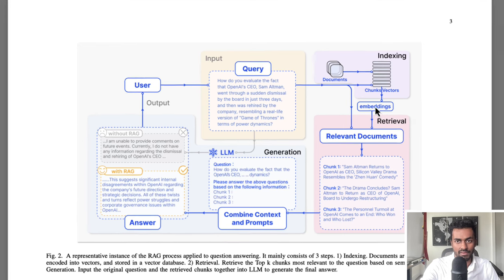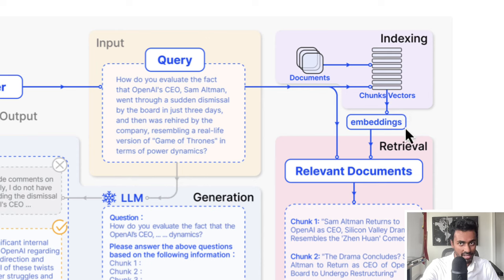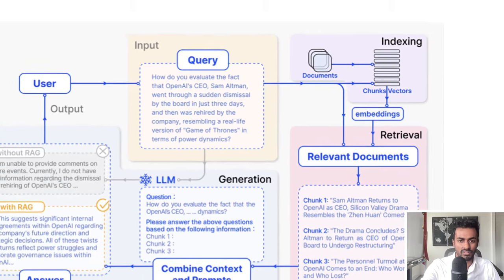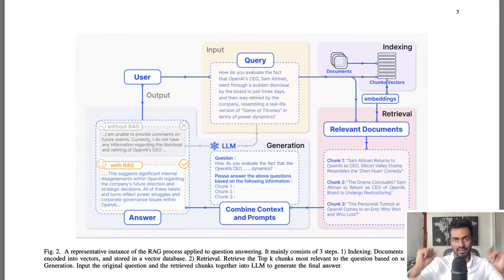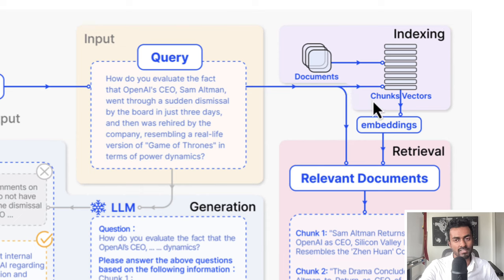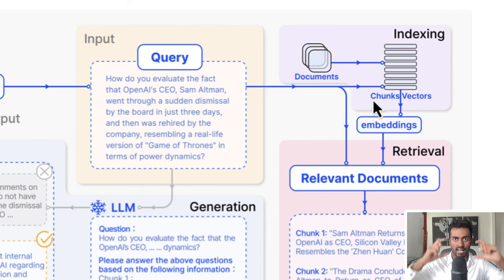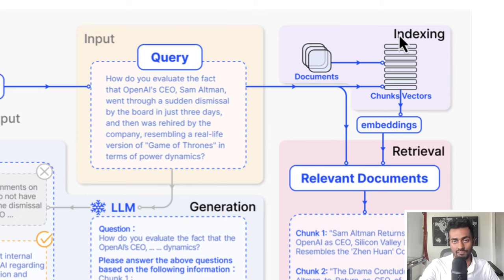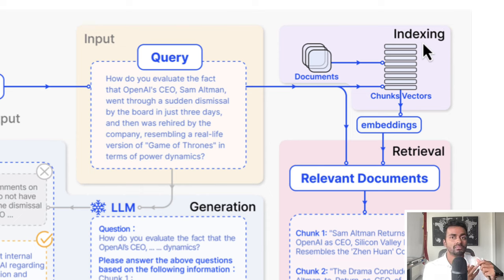Coming back to the figure: we've talked about chunks, vectors, embeddings, and indexing. Before a single query is asked, we take all documents, perform chunking to logically separate them into sentences, content-based segments, or sliding windows. Each chunk is encoded into a vector representation — each rectangle represents a vector, some numeric representation of a chunk. These are fed into an index so they can be referenced quickly, and we can compute nearest neighbors based on a query vector.